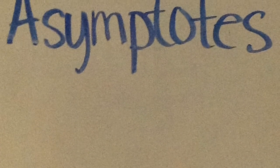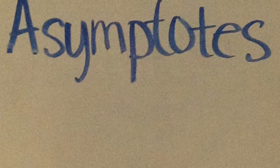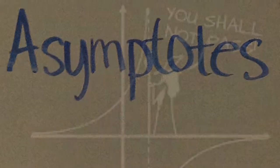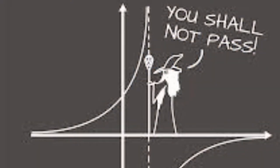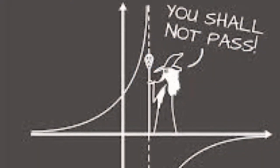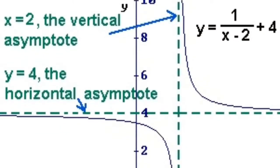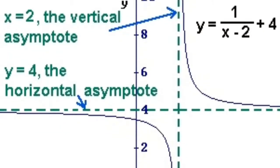You should understand asymptotes graphically and be able to compare the growth rates of different types of functions, namely polynomial functions, logarithmic functions, and exponential functions. You should also understand asymptotes in terms of limits involving infinity.